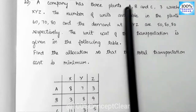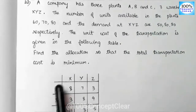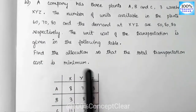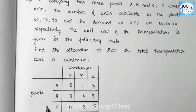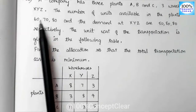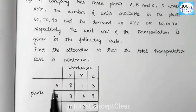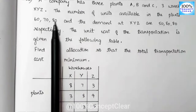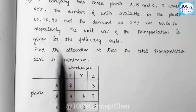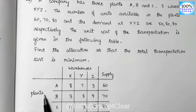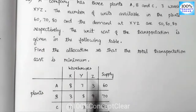We will set up the table. The plants are A, B and C. In the 3 plants, the units available — supply — are: plant A is 60, plant B is 70 and plant C is 80.